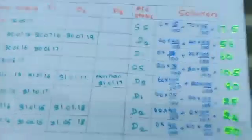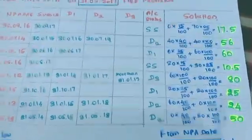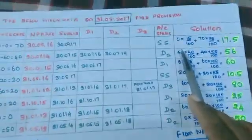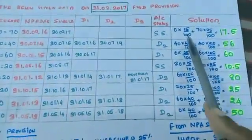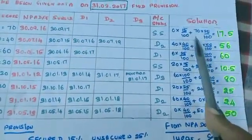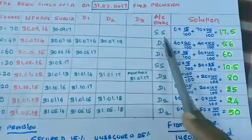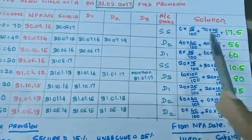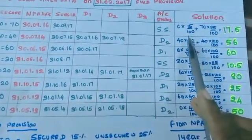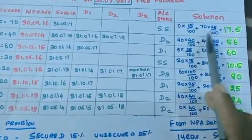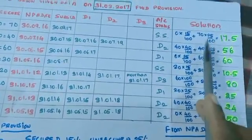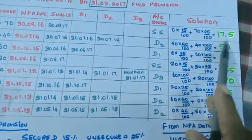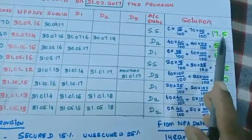Now we calculate the provision. For A1, the secured portion is 0 and unsecured portion is 70. This account is in substandard category, so the provisioning norm is: secured portion at 15% and unsecured portion at 25%. Therefore: 0 × 15/100 plus 70 × 25/100 equals 17.5 is the provision for A1.